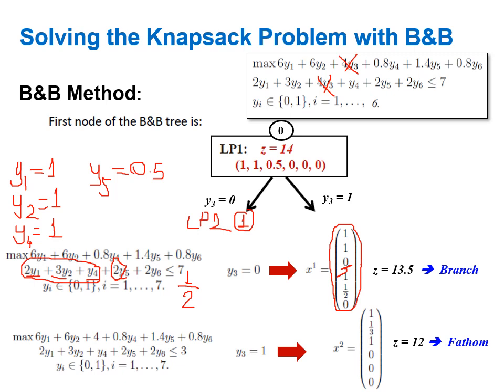We branch on y5. I now have three open nodes. According to breadth-first search I select the node at the highest level, which is the y3=1 branch from the root. I number this as node two. In node two I fix y3=1 in the formulation: the four times y3 term in the objective function contributes plus four, and on the constraint side the right-hand side reduces from seven to seven minus four equals three.